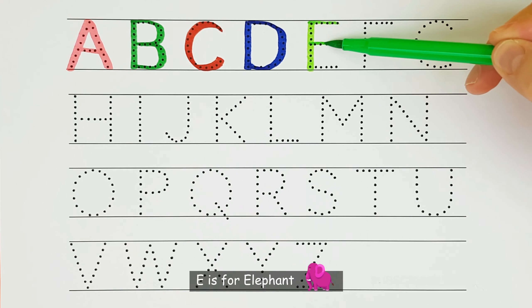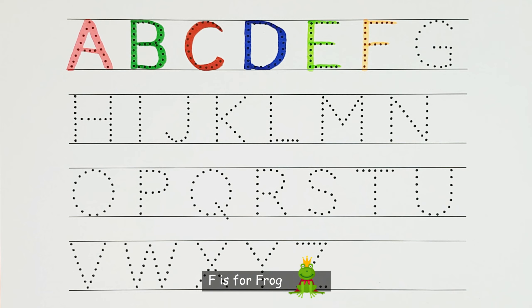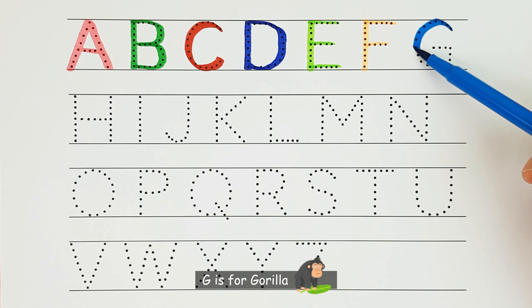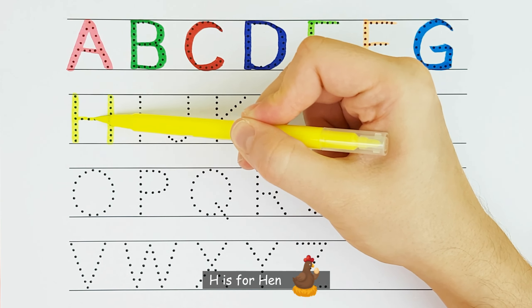E. E is for elephant. F. F is for frog. G. G is for gorilla. H. H is for hen.